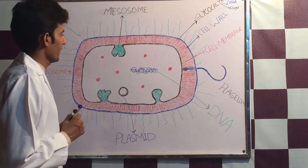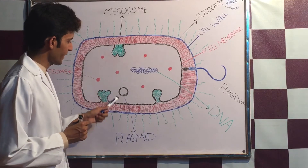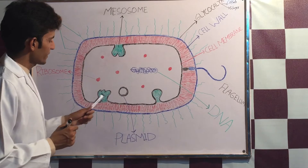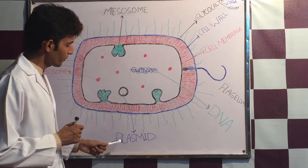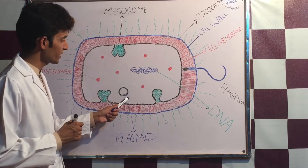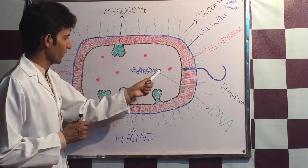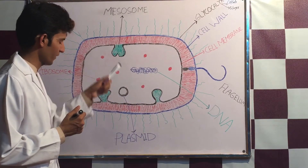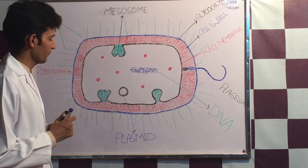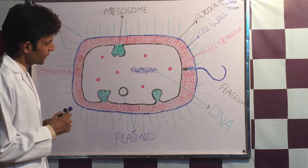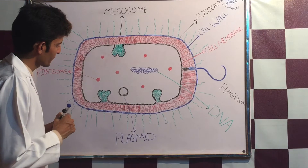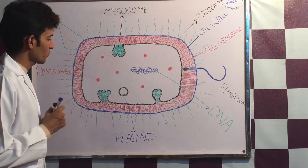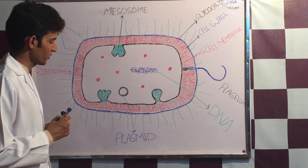There is another DNA molecule called extra-chromosomal DNA, or plasmid. This is totally different from the original chromosome and is not involved in determining the basic properties of bacteria. The function of the plasmid is to help the bacteria develop resistance against antibiotics.